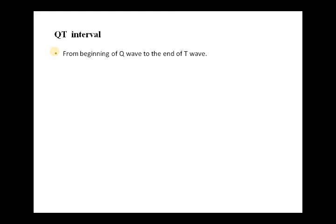Another critically important interval is the QT interval. It must be carefully assessed because it is associated with ventricular tachyarrhythmias and sudden cardiac death syndromes. The QT interval differs from PR: it runs from the beginning of the Q wave to the end of the T wave — not to the beginning of T, but to the end. It represents both ventricular depolarization and ventricular repolarization, as it encompasses the QRS complex as well as the T wave.